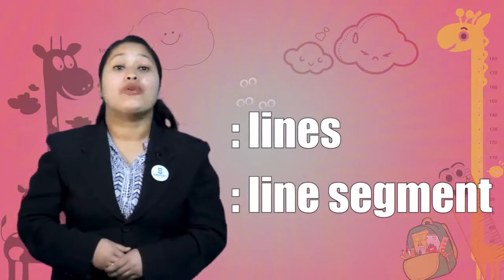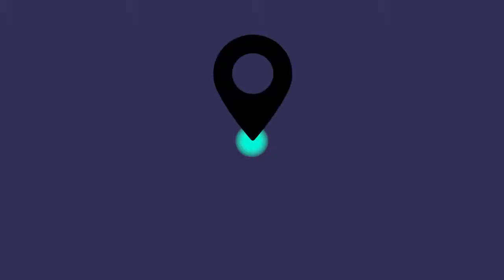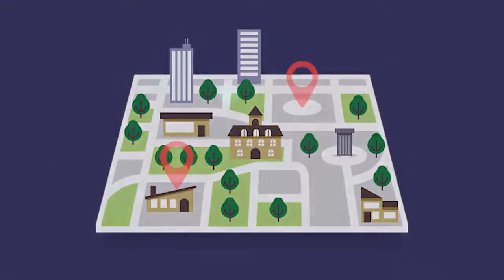So today we are going to talk about lines and line segment. In the context of geometry, a point is a location. It specifies position of an object or place. It doesn't have any width, length, and depth. It is shown by a dot.